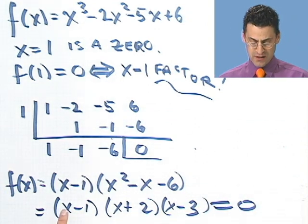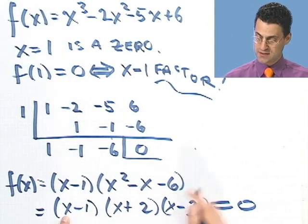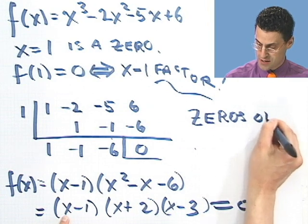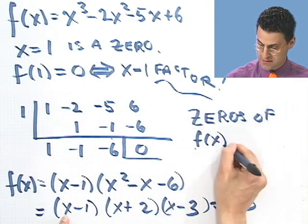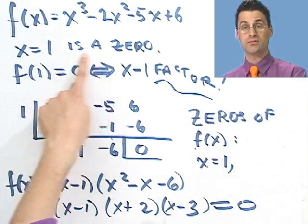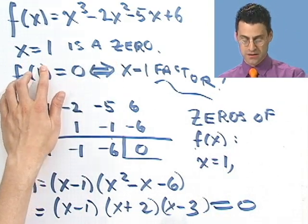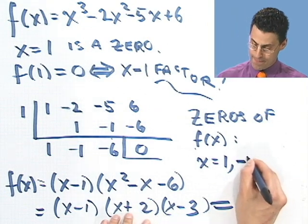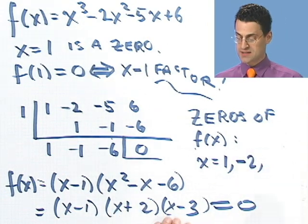What are the zeros? Set equal to 0 and solve. I see either this is 0, so here are the zeros. Zeros of f(x), x equals, well, 1. That's the one we were told, in fact. So we found it again. That's good. This equals 0 if x equals negative 2. And this equals 0 if x equals 3.